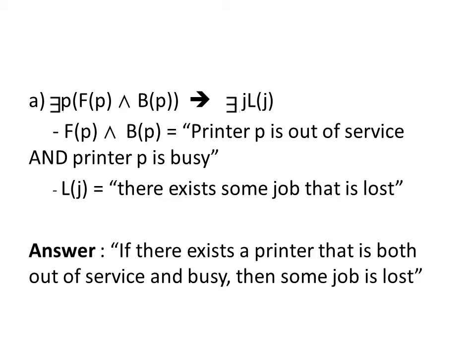Let's go over part A. This reads: there exists P such that F(P) and B(P), which implies there exists J such that L(J). F(P) and B(P) is a conjunction, which translates as 'printer P is out of service and printer P is busy.' L(J) translates as 'there exists J such that some job is lost.' So the entire translation is: if there exists a printer that is both out of service and busy, then some job is lost.